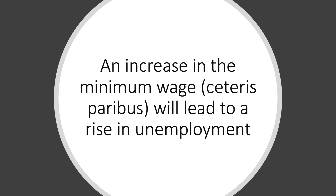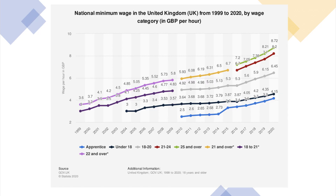This is a fairly standard piece of economic theory, but it does assume Ceteris Paribus. If the minimum wage goes up, some firms may decide to cut back on employment, causing classical or real-wage unemployment. The minimum wage in the UK has been rising — the government announced a 6% rise from £8.21 to £8.72 per hour for adult workers, with commensurate increases for younger workers, as shown in this chart. So does a minimum wage increase, Ceteris Paribus, lead to higher unemployment?